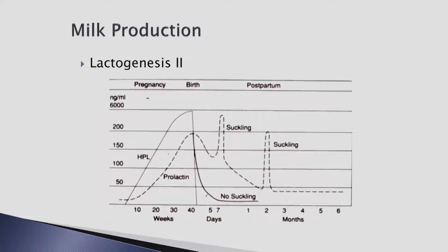Immediately postpartum, colostrum — the first milk — is available in the breast. Keep in mind that retained placenta parts may inhibit lactation by keeping pregnancy hormones elevated.